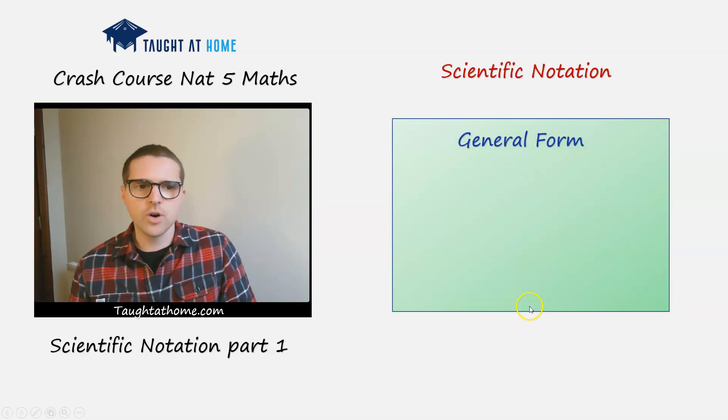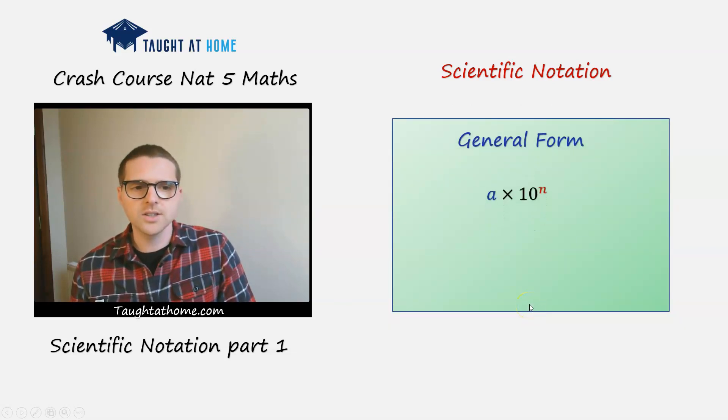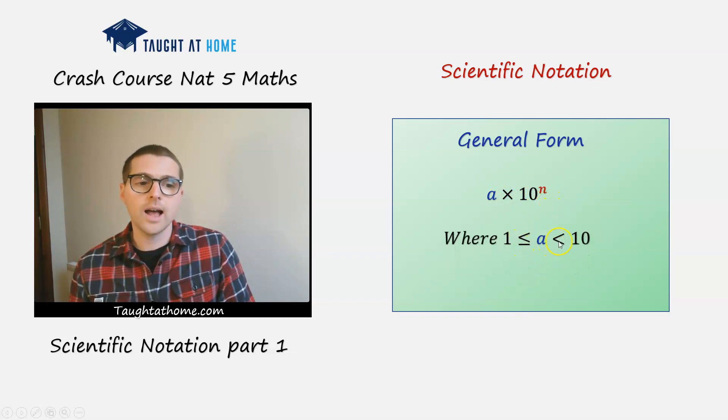So the general form for scientific notation states that for a number to be in strict scientific notation, it'll look like a times 10 to the power of n, where a has to be between 1 and 10. So it has to be between 1 and 10.